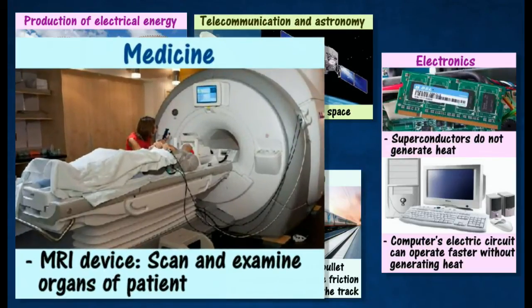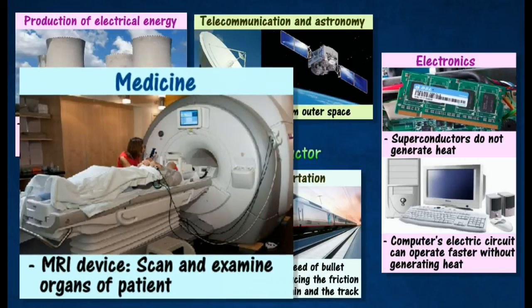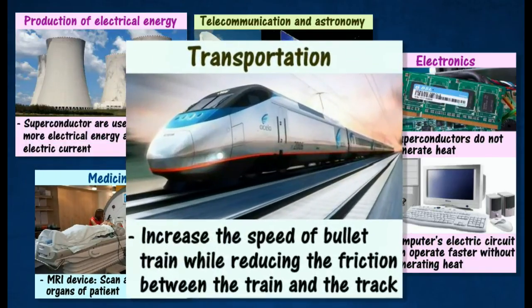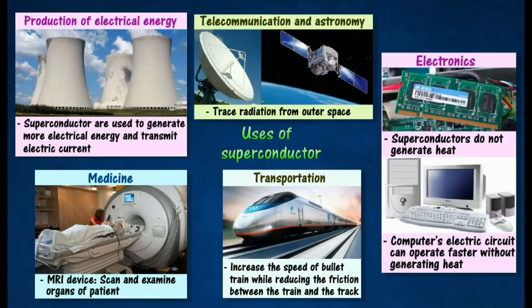Strong electromagnets made from superconductors are used in magnetic resonance imaging devices, or MRI, to scan and examine organs of patients. Superconductor electromagnets are also used to increase the speed of bullet trains while reducing friction between the train and the track.